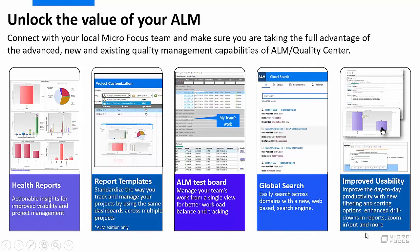Other enhancements that were introduced include health reports and dashboards, which help you to control the progress and status of your projects, and the ability to share these reports across multiple projects for ALM users. The ALM Test Board helps managers see the workload in their teams and progress, and also helps individual contributors identify work items assigned to them. ALM Global Search enables you to search multiple entities across projects and domains, alongside improvements to usability such as improved drill-downs, advanced filtering, and zoom in and zoom out capability.